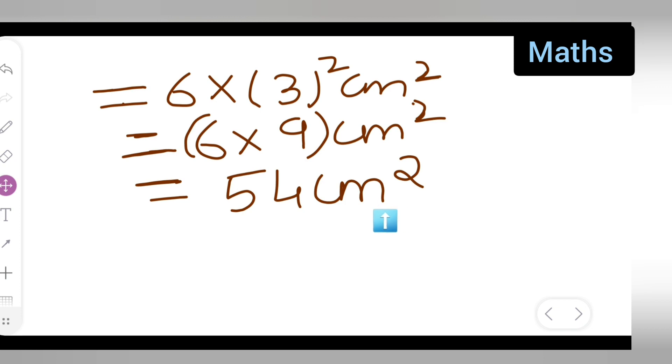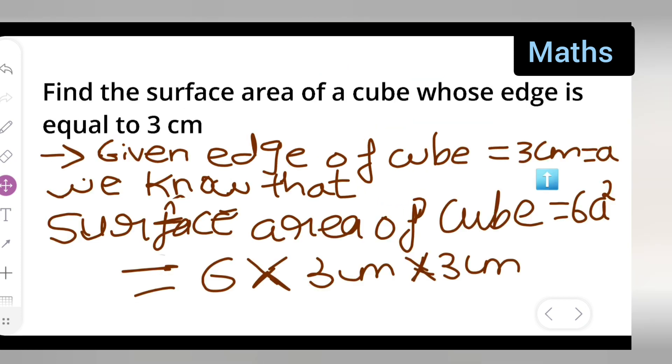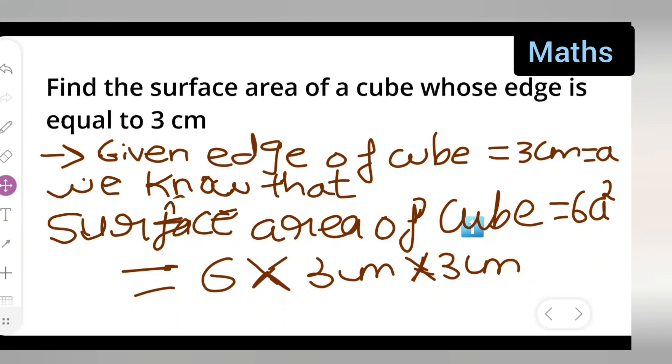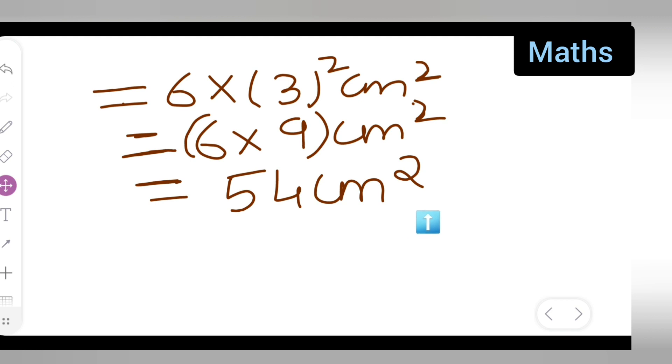So the surface area of the cube is 54 centimeter square. I hope you all have understood how to find the surface area of the cube.